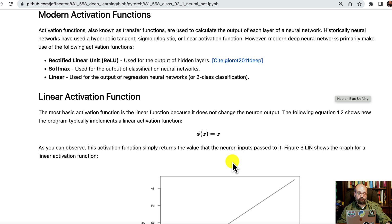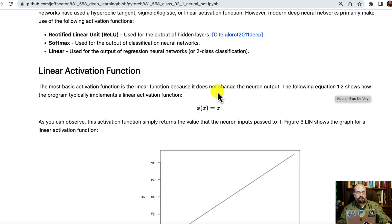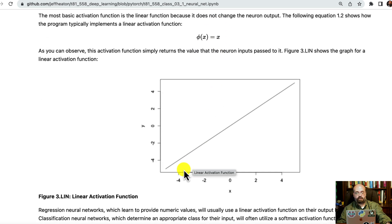Activation functions become very important, because they are what puts that non-linearity into there. Without the activation function, this would be straight. The linear activation function is the most simple. It's just straight. This is usually the output layer of a regression neural network.